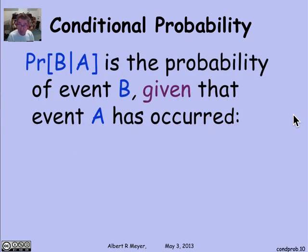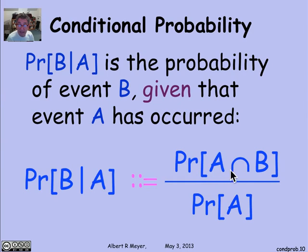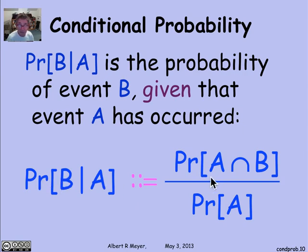All of the previous discussion was motivation for the following definition. If A and B are events in a probability space, the probability of B given A is defined to be the probability that A and B occur — that is, A intersection B — relative to the probability of A. This formal definition justifies the product rule by definition: multiply both sides by the probability of A, and you get P(A) times P(B|A) equals P(A ∩ B). Note that implicit in this definition is that the probability of A must not be zero — you can't condition on an event that has zero probability.